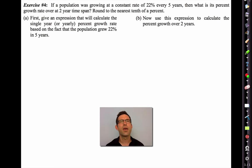Let's see how much you understand this. Let's say that we have a population that's growing at a constant rate of 22% every five years. So that's the five-year rate, the half-decade rate. Every five years, we go up by 22%. Then what is its percent growth rate over a two-year time span? Round to the nearest tenth of a percent. So we know how much it grows every five years. We want to know how much it grows every two years. Letter A says, first, give an expression that will calculate the single year or yearly percent growth rate.